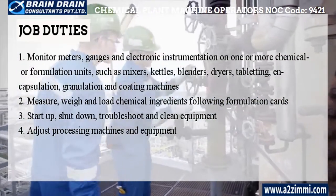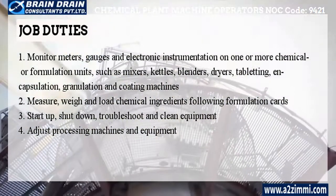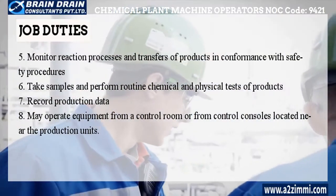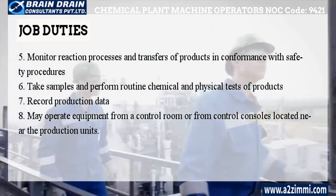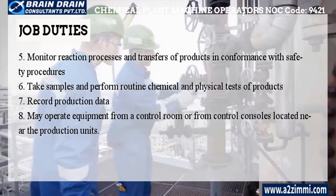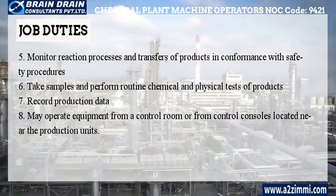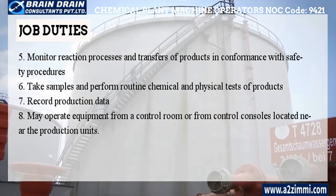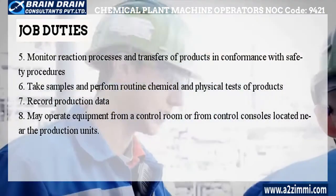1. Startup, shutdown, troubleshoot, and clean equipment. 2. Monitor reaction processes and transfers of products in conformance with safety procedures. 3. Adjust processing machines and equipment. 4. Take samples and perform routine chemical and physical tests of products. 5. Record production data. Operators may operate equipment from a control room or from control consoles located near the production units.